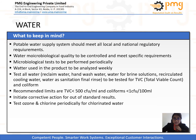Potable water supply systems should meet all local and national regulatory requirements. Water microbiological quality to be controlled and meet specific requirements by performing periodic microbiological testing. Testing of all water — including reclaimed water, hand wash water, water for brine solutions, recirculated cooling water, and water used as a final rinse — to be tested for TVC and coliforms. Corrective actions to be initiated for out-of-standard results. Ozone and chlorine to be tested periodically for chlorinated water, and weekly analysis to be conducted for water used in the product.